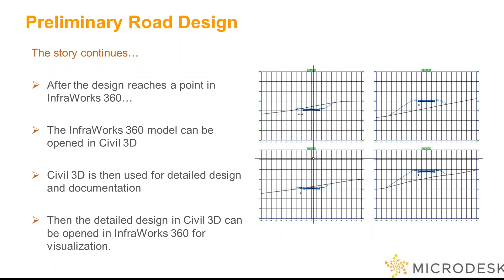Once you feel you have reached a point in your InfraWorks model that you're ready to move forward with your project, that's where you can utilize Civil 3D. Civil 3D will step up and take over your project, processing that data, refining your profiles, refining your alignment layouts, generating all your reporting, construction docs, and cross-sections. The nice thing is you're not leaving your InfraWorks model behind — you can take that refined Civil 3D model data and take it back into InfraWorks, maintaining that relationship throughout the entire course of your project.